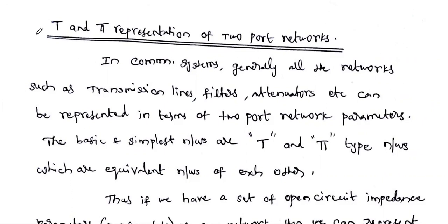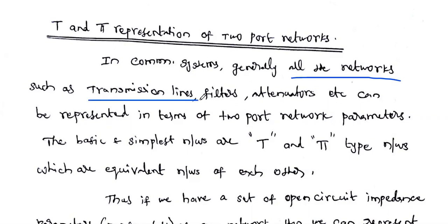So now we will discuss about our topic: T and Pi representation. Usually in communication systems, generally all networks such as transmission lines, various electronic filters, attenuators, etc. can be represented in terms of a two-port network.